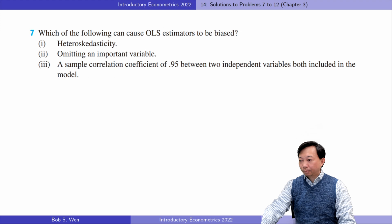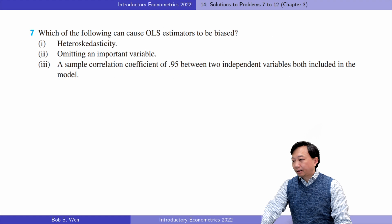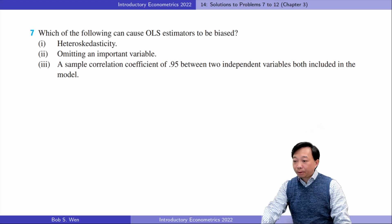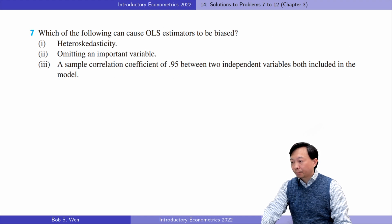For problem number seven, first question: heteroscedasticity does not cause OLS estimators to be biased. As long as the error term is not correlated with the explanatory variables, the OLS estimators will be unbiased — it has nothing to do with the variance of the error term. If the error term has the same variance given any value of X, the OLS estimator is the most efficient estimator among all unbiased estimators, meaning it has the smallest variance. We call it the Best Linear Unbiased Estimator (BLUE).